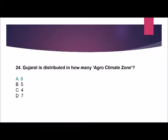Question number 24: Gujarat is distributed into how many agro-climate zones? Options are: 8, 5, 4, or 7. The correct answer is 8.